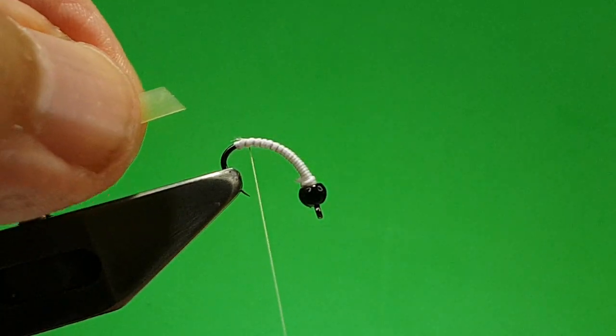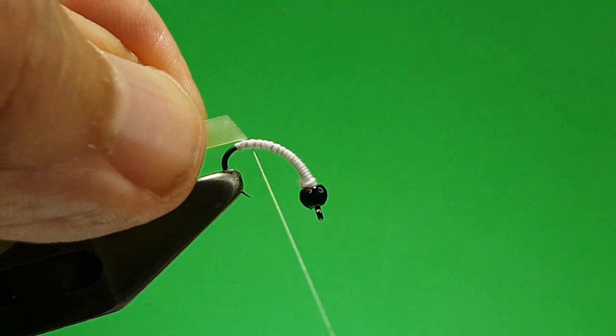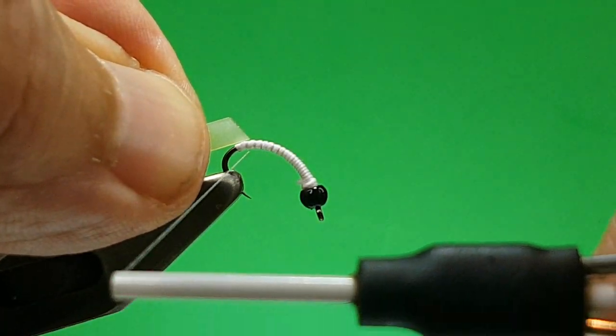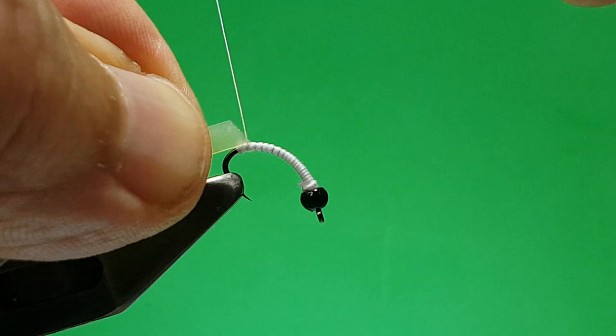So away from you slackens the thread off, towards you tightens it up, or clockwise. Just catch your, offer your point up to the top of the hook shank.